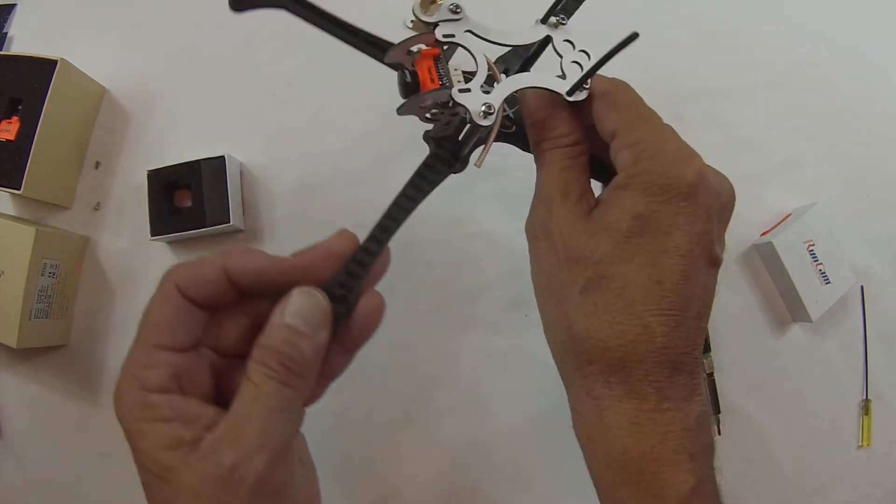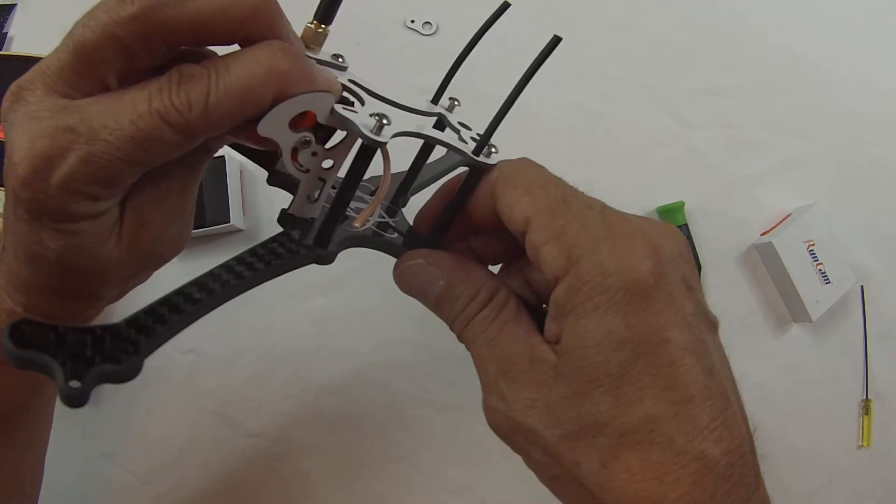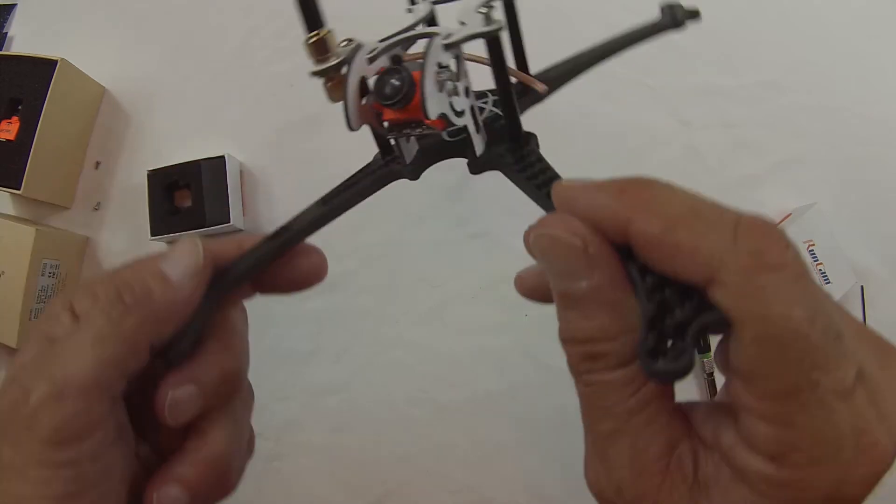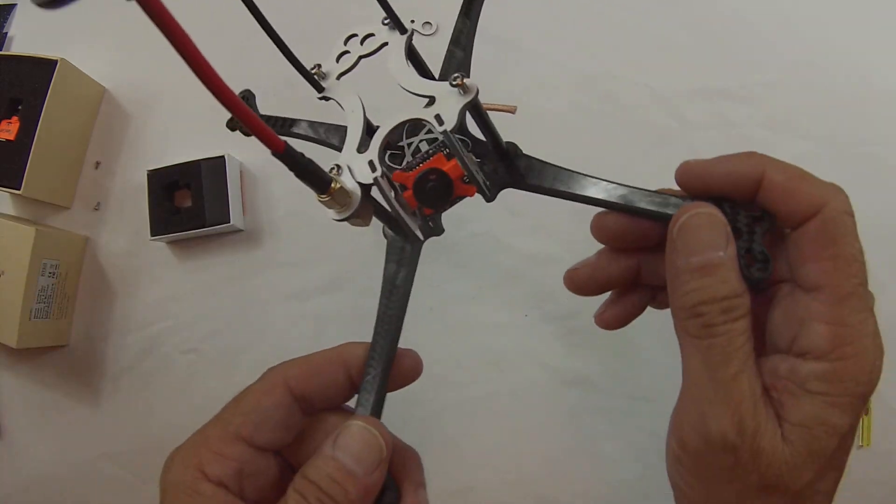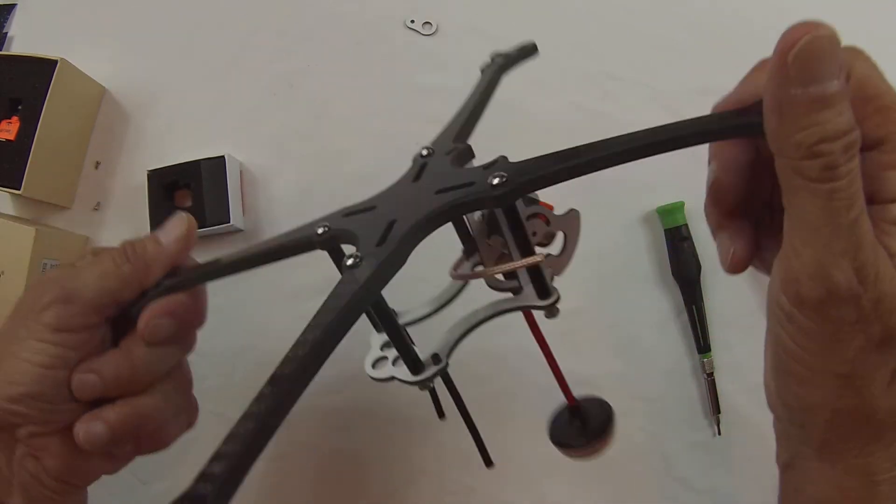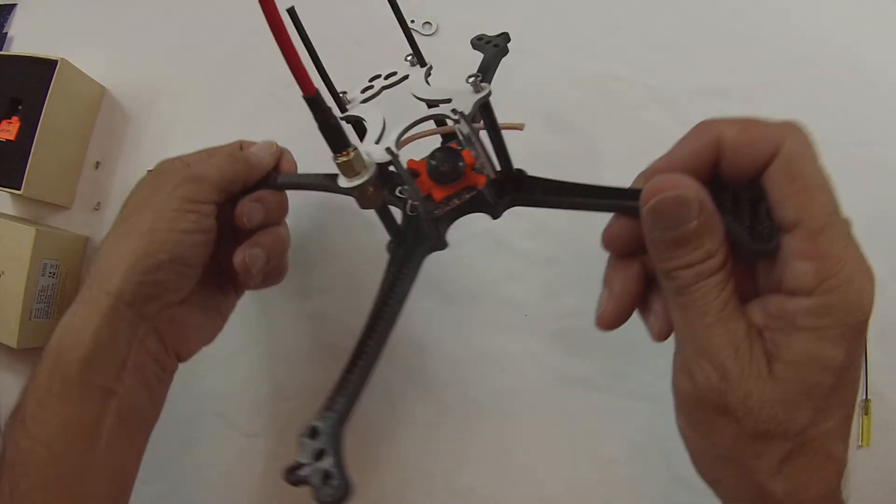So there you have it folks. It's the all new 5 inch Aurora. This is Bobby here at Space One FPV and signing out. Make sure you check us out. www.Space One FPV. Space One. Have fun.